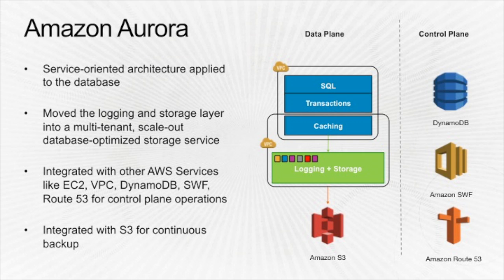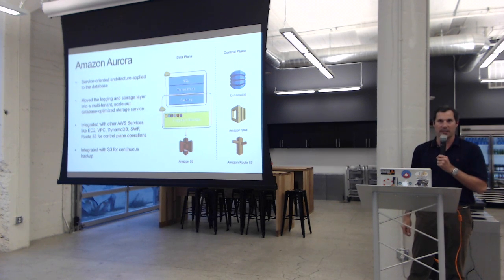We've applied service-oriented architecture at the storage layer, similar to how EBS is a block storage service used by EC2 where the storage lives outside of EC2. We did something very similar with Aurora, creating a service-oriented architecture for accessing storage. We've also made extensive use of other AWS services like S3, Route 53, SWF, and DynamoDB for the control plane — the part that controls provisioning, metadata, DNS endpoints, and backup.